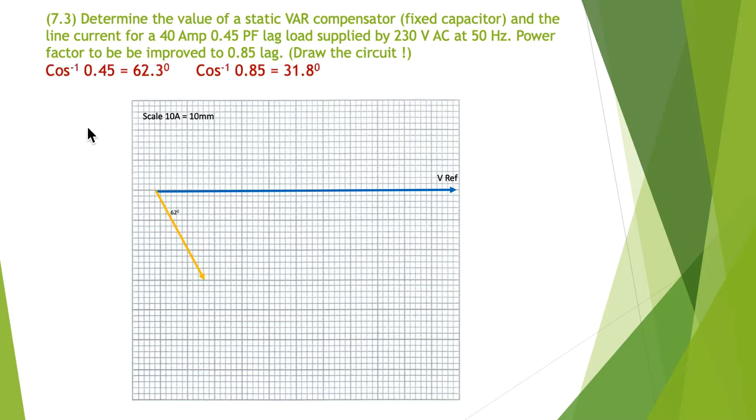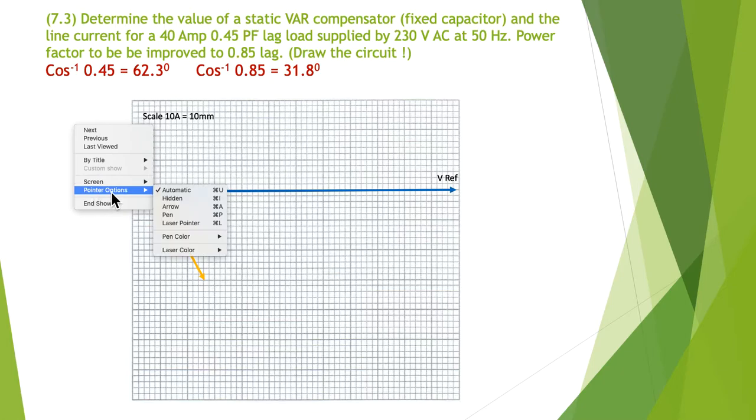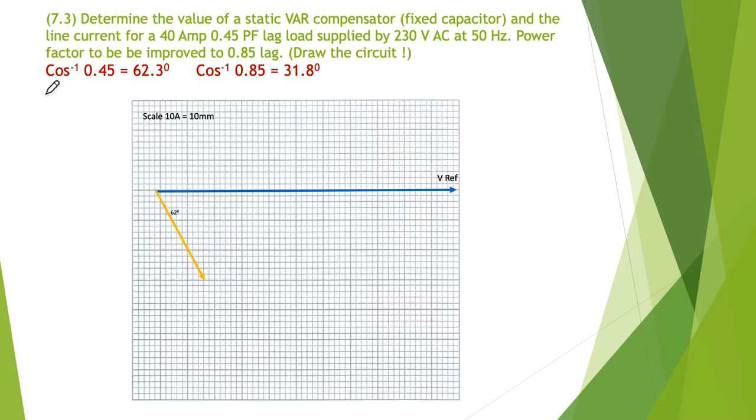I've simply worked out the cosine inverse. Cosine inverse of 0.45 tells me 62 degrees. Cosine inverse of 0.85 lag gives me 31 degrees. So I've got to improve from 62 degrees and shift this up to 31 degrees.